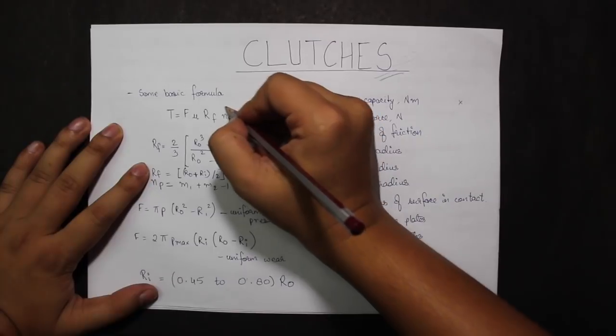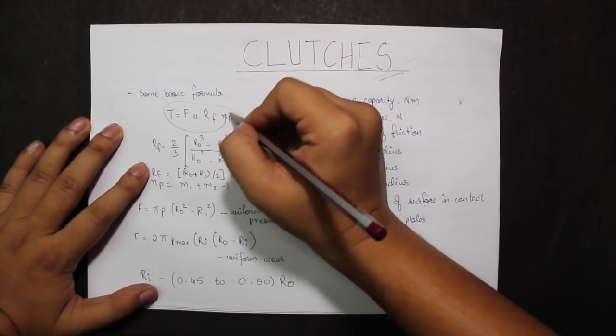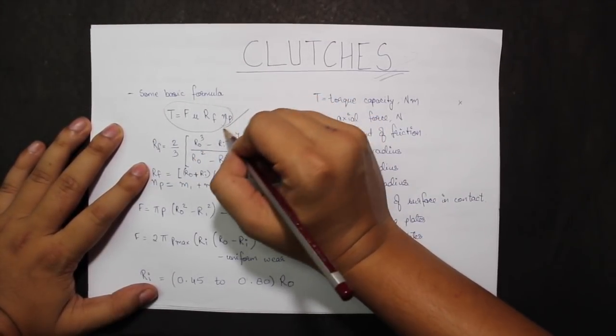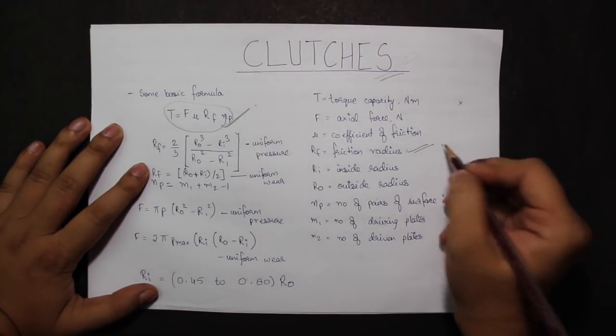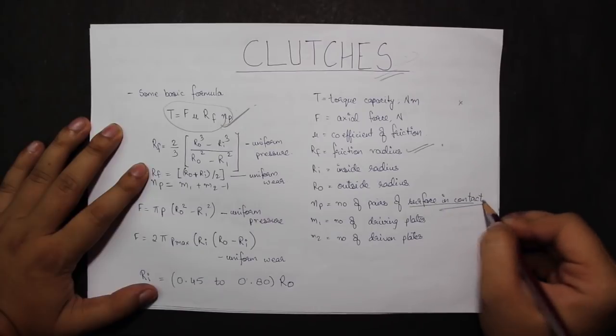Starting with the very first formula: T, or torque capacity, is F mu R N. R or RF is the friction radius, and NP is number of pairs of surfaces in contact.